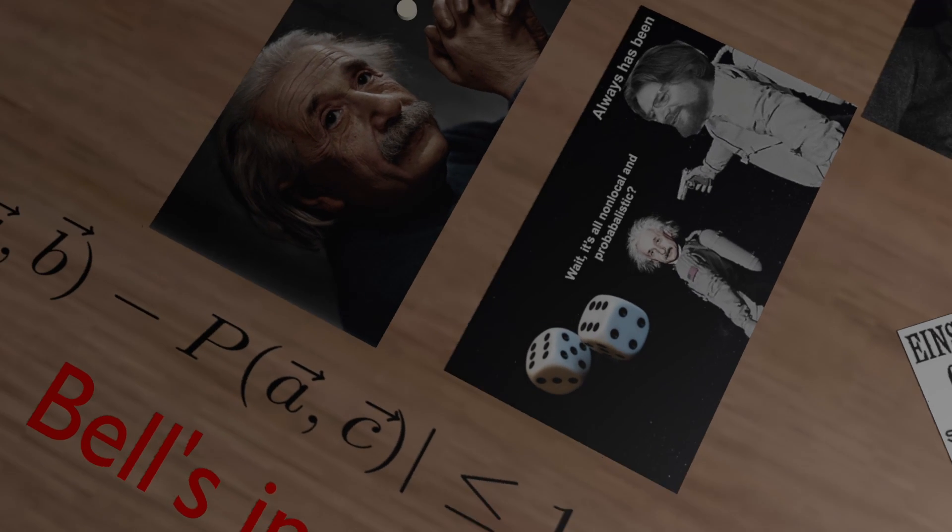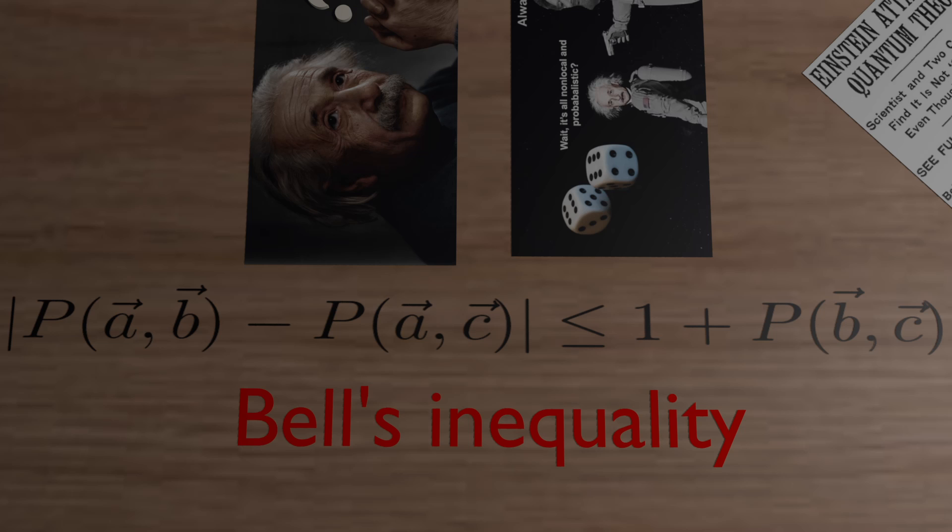Fast forward to the 1960s and physicist John Bell. Bell developed an inequality known as Bell's inequality to test whether quantum mechanics truly allowed for spooky action, or if Einstein's theory about hidden variables was right.